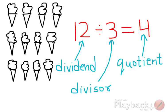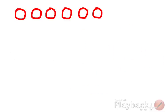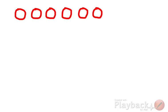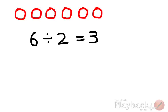Let's understand this with some other examples. Here we have 6 objects: 1, 2, 3, 4, 5, 6. If we want to divide them into 2 equal groups, then we have to put 3 in each group. So we write it as 6 divided by 2 is equals to 3 — 3 in each of the 2 groups.